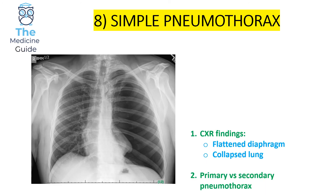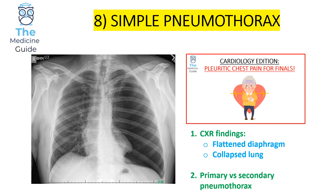This is an example of a simple pneumothorax. The classical chest x-ray features include a collapsed lung and a flattened diaphragm. You also need to be confident about the causes of a primary versus secondary pneumothorax.